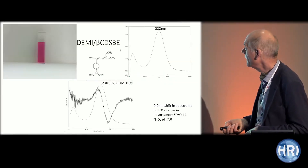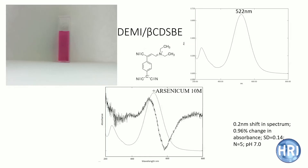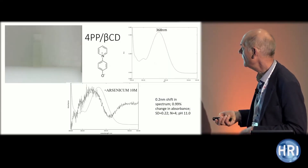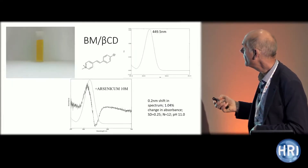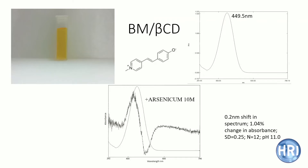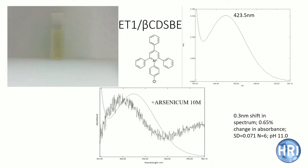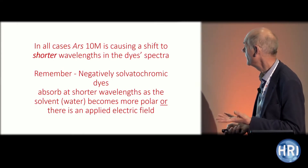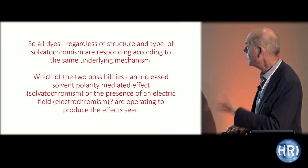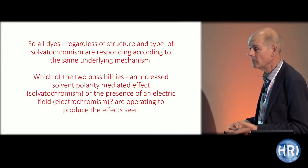Now the four negatively solvatochromic dyes. The first, DEMI, shows the opposite effect — a blue shift in absorbance, meaning the ground state is being stabilized rather than the excited state. Next, 4PP, which absorbs in the UV around 368 nanometres, also shows a blue shift. Brooker's merocyanine, again negatively solvatochromic, shows a blue shift. And finally ET1 also shows a blue shift. So four negatively solvatochromic dyes all show a blue shift; four positively solvatochromic dyes all show a red shift — regardless of structure and type of solvatochromism, the dyes are responding according to the same underlying mechanism.